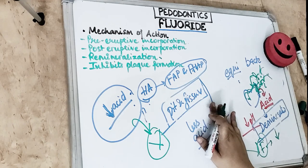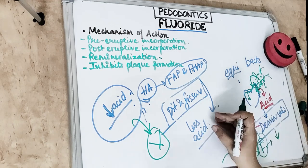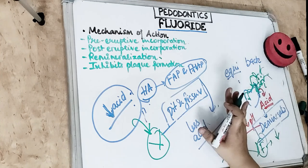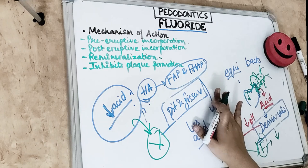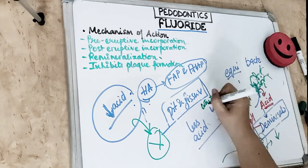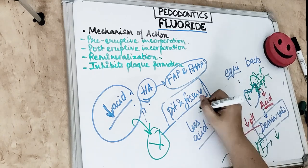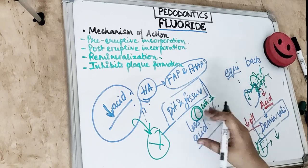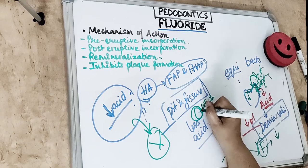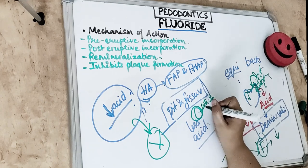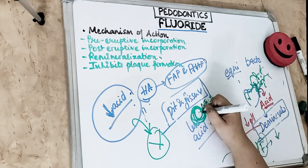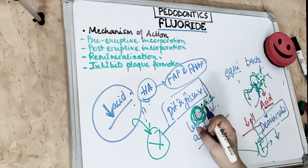This remineralization explains white spots, which are the initial lesions of caries — rough and chalky spots. When fluoride is incorporated, these spots become smooth and shiny. The surface of this white spot should not be probed too hard, as the area is mineral-deficient and weak and may break. We should apply topical fluoride and allow that area to remineralize.